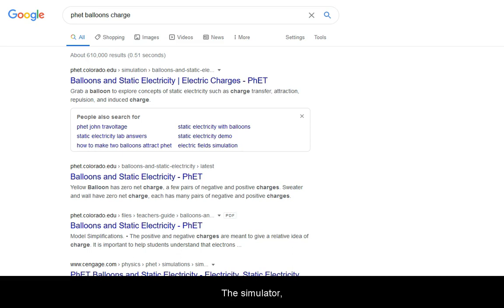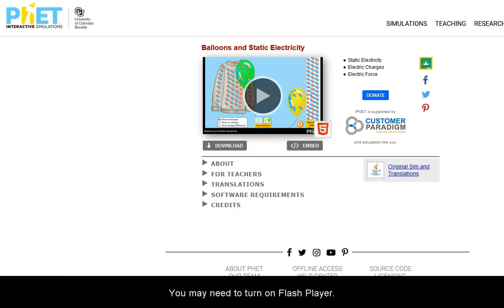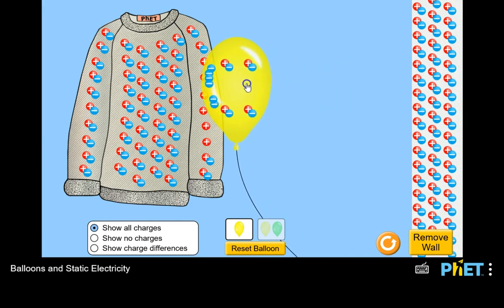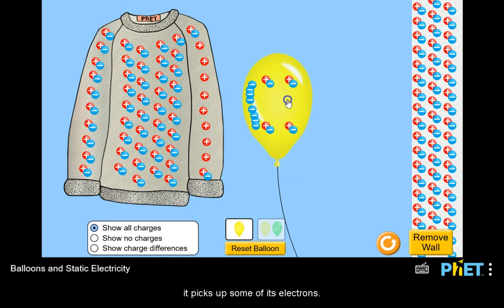The simulator from phet.colorado.edu can give you some practice with the separation and conservation of charge. You may need to turn on flash player. In this simulation, we have a plastic balloon and a fur sweater. When you rub the balloon against the sweater, it picks up some of its electrons.